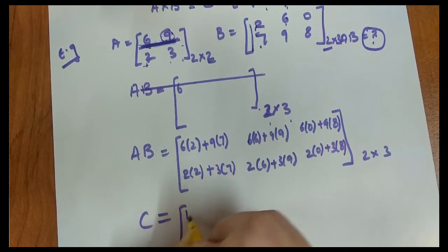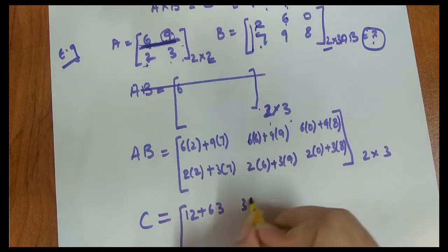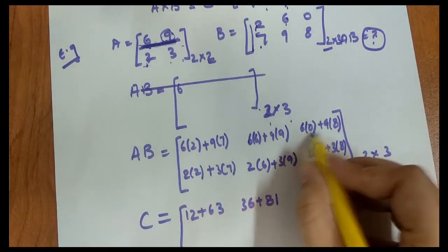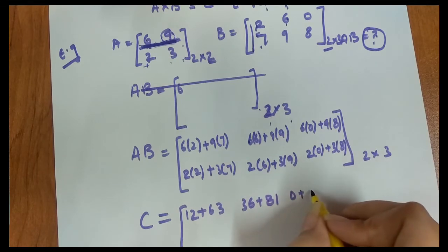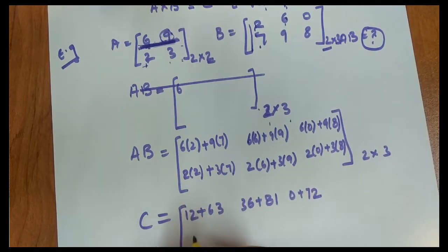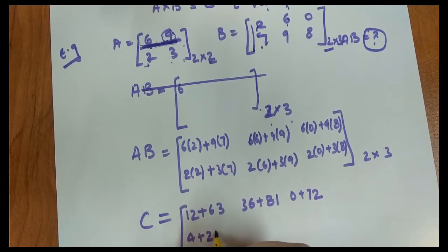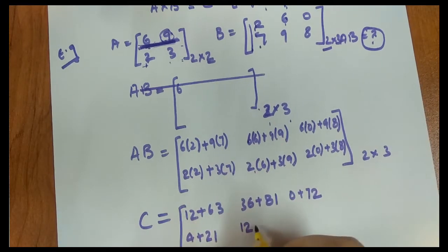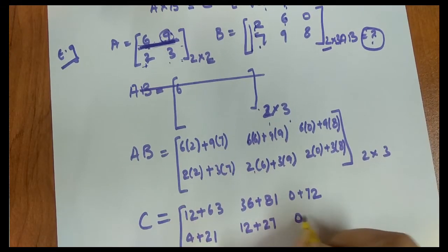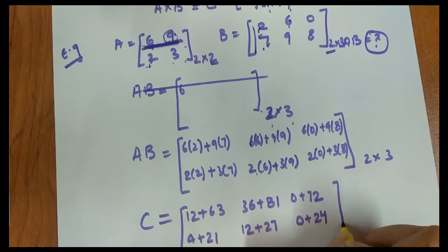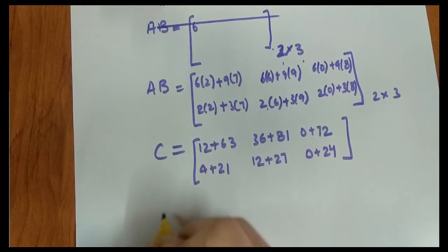Second row second column should be 2 times 1, second row third column: 2 times 0 plus 3 times 8. Now let's calculate directly. It's 12 plus 63, 36 plus 81, 0 plus 72, 4 plus 21, 12 plus 27, 0 plus 24.